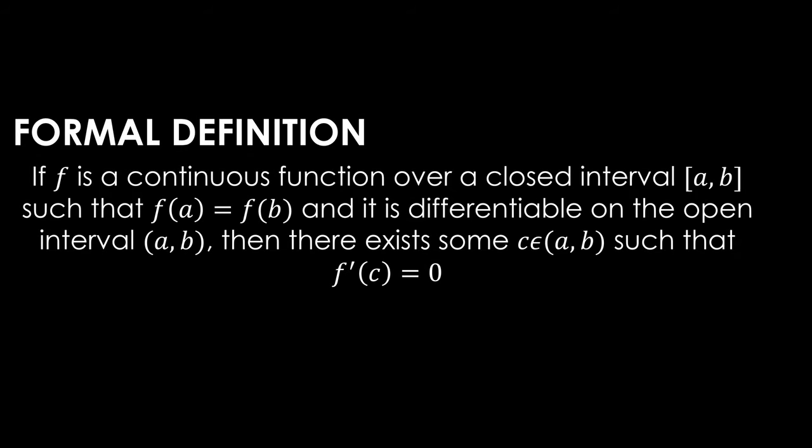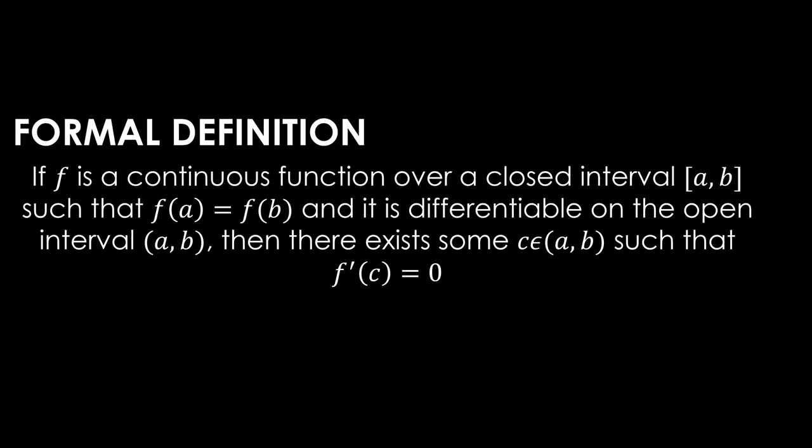The formal definition of Rolle's theorem says that if f is a continuous function over a closed interval a to b, such that f(a) is equal to f(b), and it is differentiable on the open interval a to b, then there exists some c, which is an element of a to b, such that the derivative at point c is equal to zero.